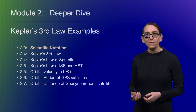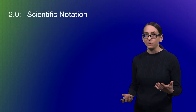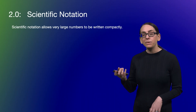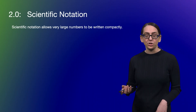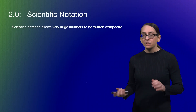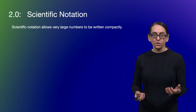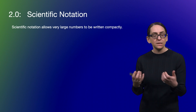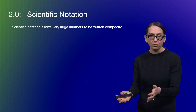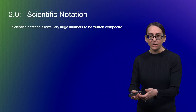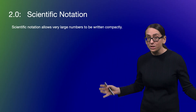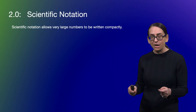The first thing we need to talk about is scientific notation. Scientific notation is a way of being able to talk about very large numbers and to write them out compactly. Scientific notation takes advantage of our brain's ability to see small numbers quickly. So let's say I throw a bunch of rocks on the ground. If it's a handful, you'll be able to say that's five rocks. But if I throw a ton of them, you actually have to start counting.